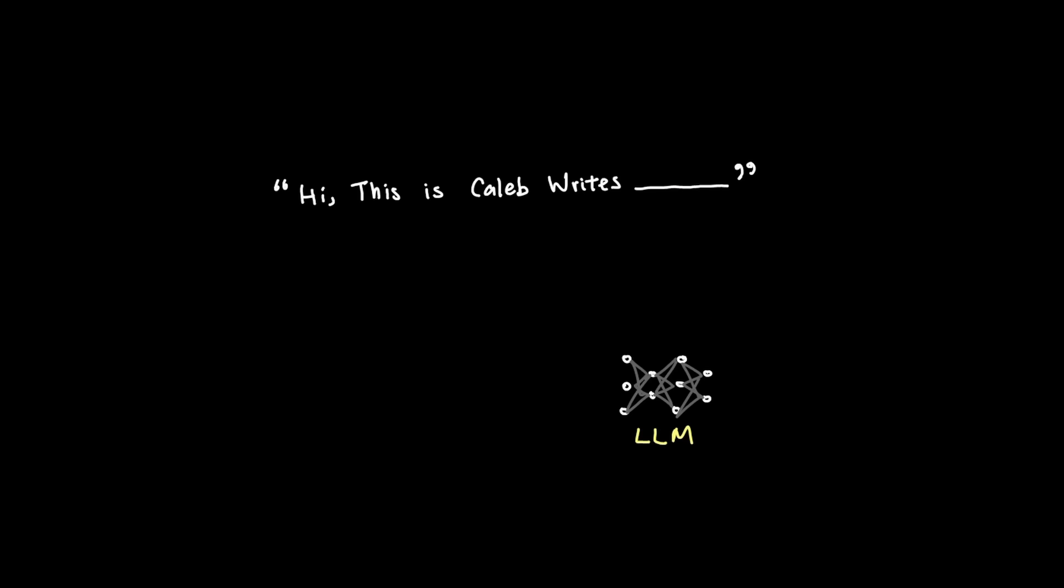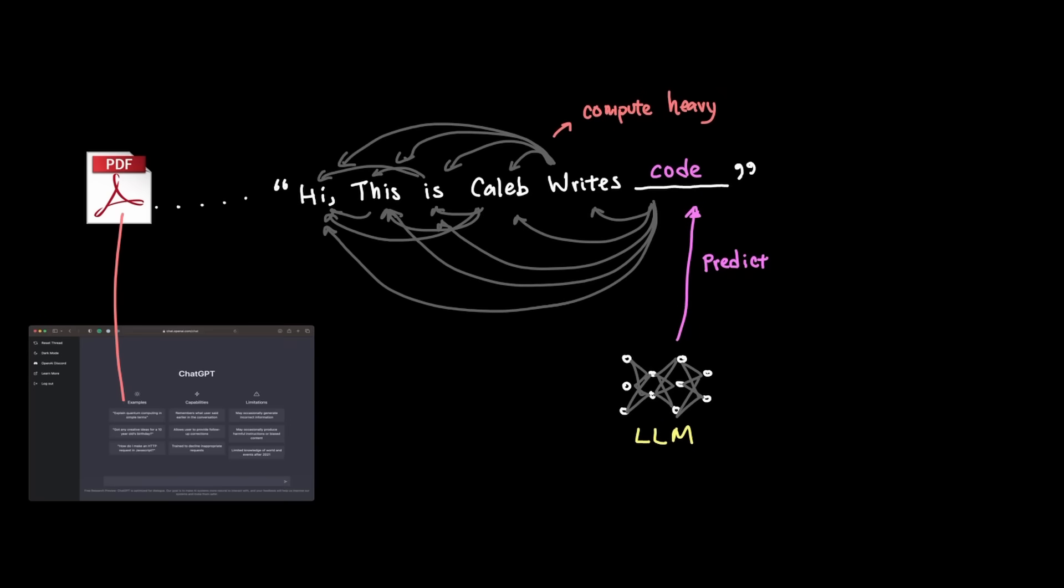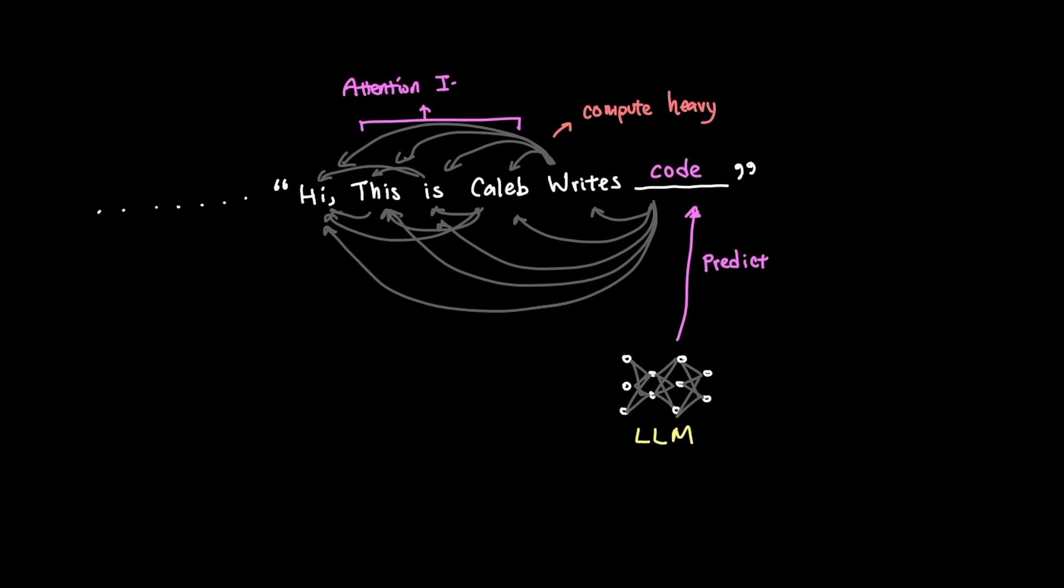In traditional LLMs, the LLMs predict the next word by looking at every preceding token to predict the next token. And as you can imagine, this is computationally heavy, especially if your input is extremely long, like dropping an entire PDF to ChatGPT to analyze them. That's going to be a lot of computation that's needed because attention is expensive. Okay, so if attention is expensive, what are some of the alternatives?